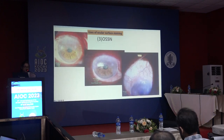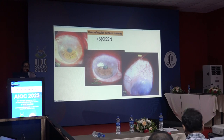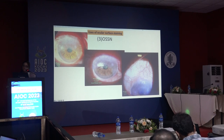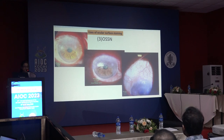The third use is in OSSN — ocular surface squamous neoplasia. Rose bengal stain is used to delineate the area of involvement, including small satellite patches that may not be visible without staining. This is especially important for surgical planning, as all involved areas must be included in the excision.